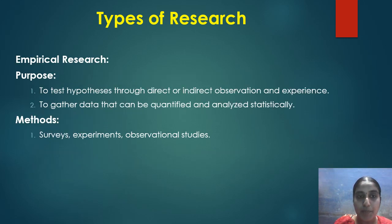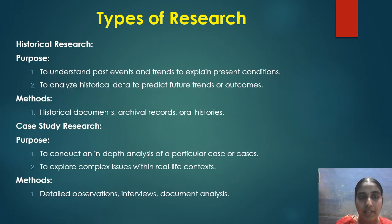Empirical research: the purpose is to test hypotheses through direct or indirect observation and experience, and to gather data that can be quantified and analyzed statistically. Methods include surveys, experiments, and observation studies. Historical research aims to understand past events, explain present conditions, and analyze historical data to predict future trends or outcomes. Methods include historical documents, archival records, and oral histories.